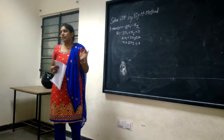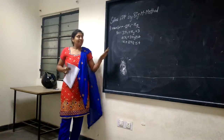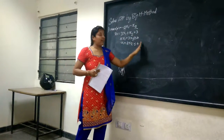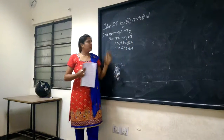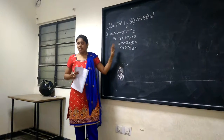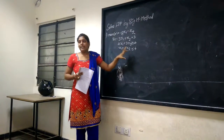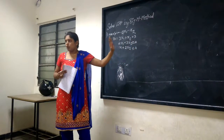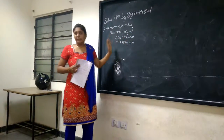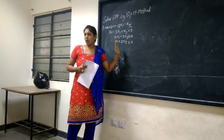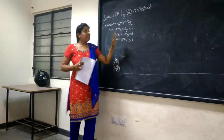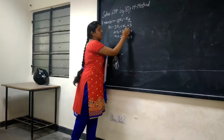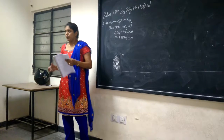Solving with the big M method requires certain rules. The first step is to check the right-hand side of the constraints — the right side of the constraints should always be positive. If they are not positive, we multiply by minus 1. The second step is to observe the inequality symbols: equal to, greater than or equal to, or less than or equal to.